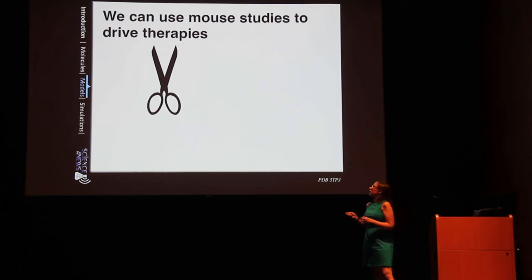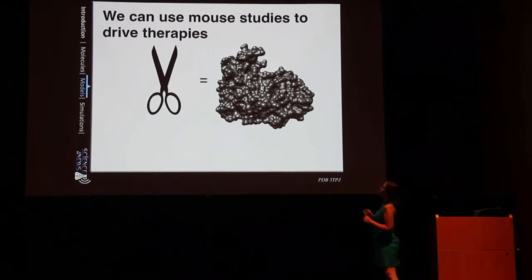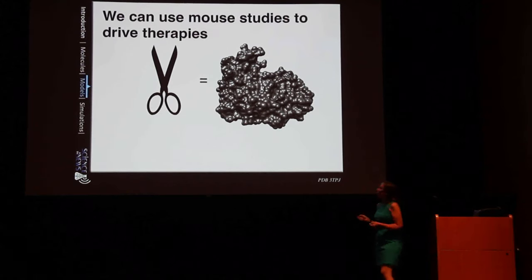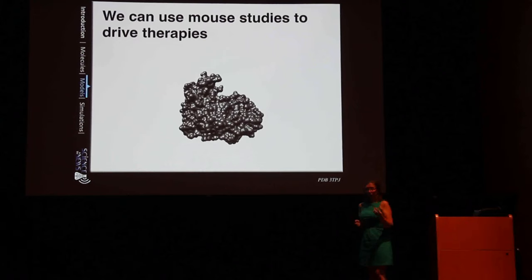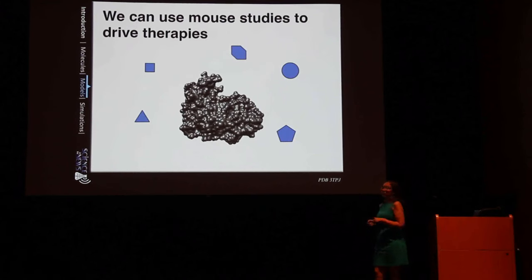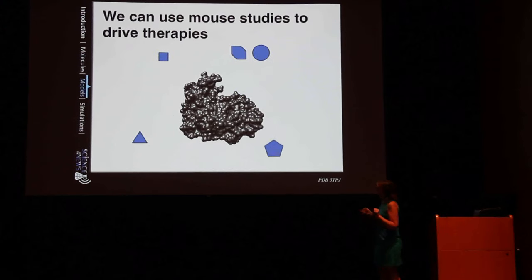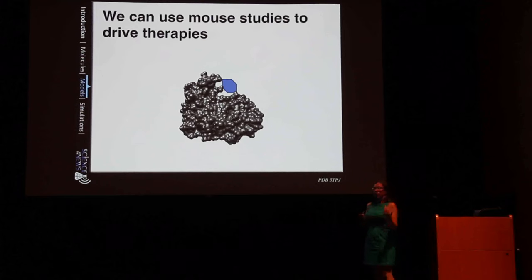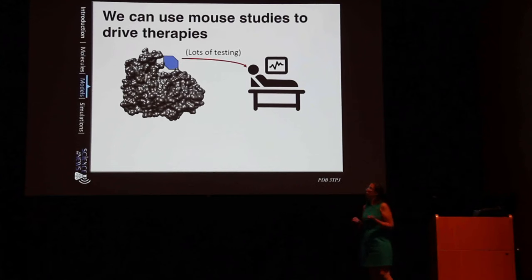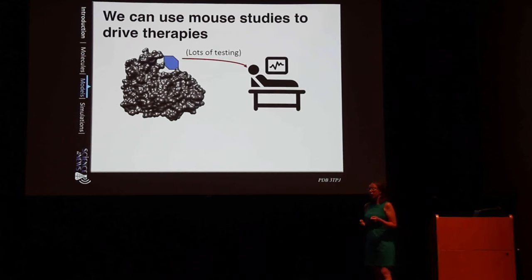I've been showing the scissors metaphor to communicate this protein's function, but this is what the protein actually looks like in cells. We can use this structural information to make therapies to potentially treat Alzheimer's patients. A group of researchers took this protein and screened thousands and thousands of different molecules to see if anything would stick and wedge the scissors open so it no longer functioned properly. Eventually they found a candidate molecule that stuck and wedged the scissors open.